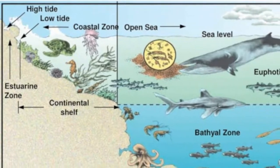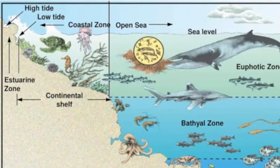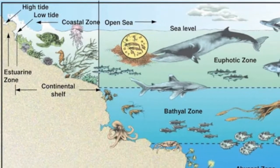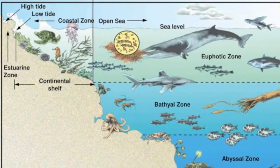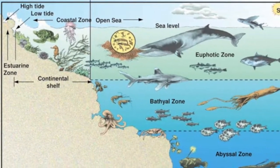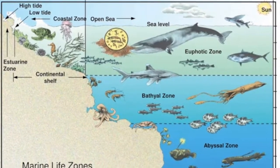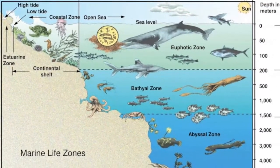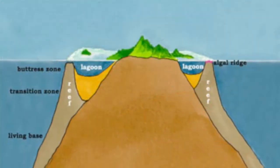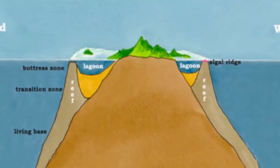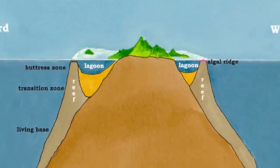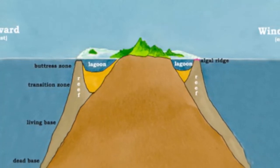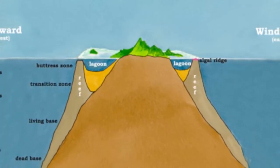The restricted environmental conditions required for coral growth create an interesting paradox. How can corals, which require warm, shallow, sunlit water no deeper than a few dozen meters to live, create structures such as coral atolls that extend into deep water?